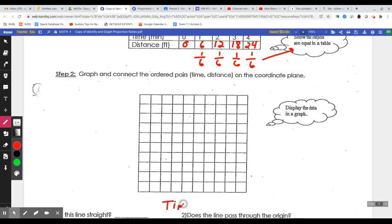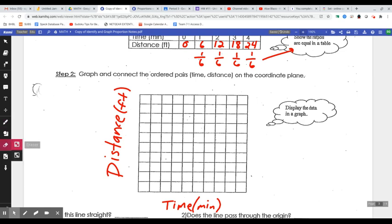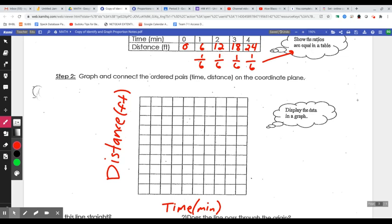Okay, whenever you have time, that should go on the x-axis, and this is minutes. So we're going to write that in there. And on the side will be the distance. Distance, and that is feet.